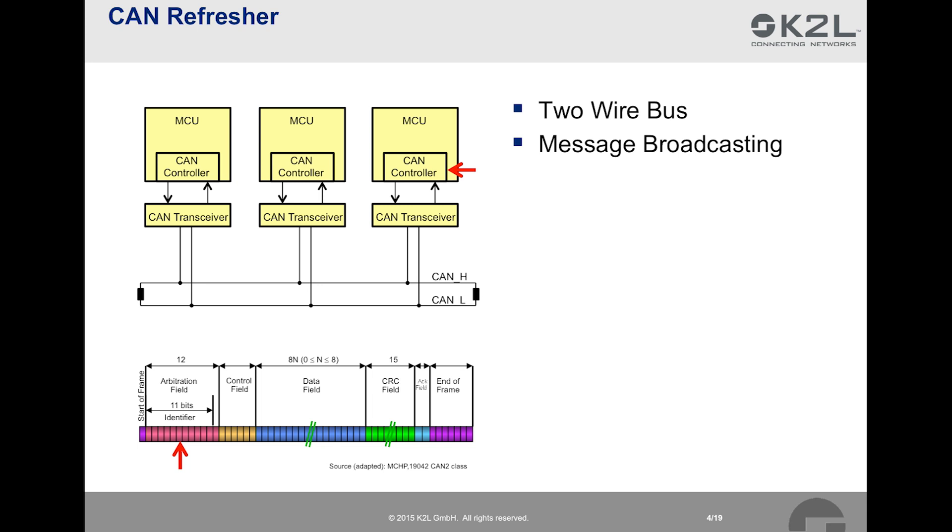As you can see from the frame structure, there is no field with a source address or destination of the message. In other words, in CAN, the messages and frames are transmitted in a broadcast fashion to all nodes in the network. When you look closely at the arbitration field, you see that there is an 11-bit identifier contained. This identifier determines the type of the message rather than the destination, and it is up to the receiving nodes to decide if they want to process the message or not. This message filtering is usually implemented in the CAN controller.